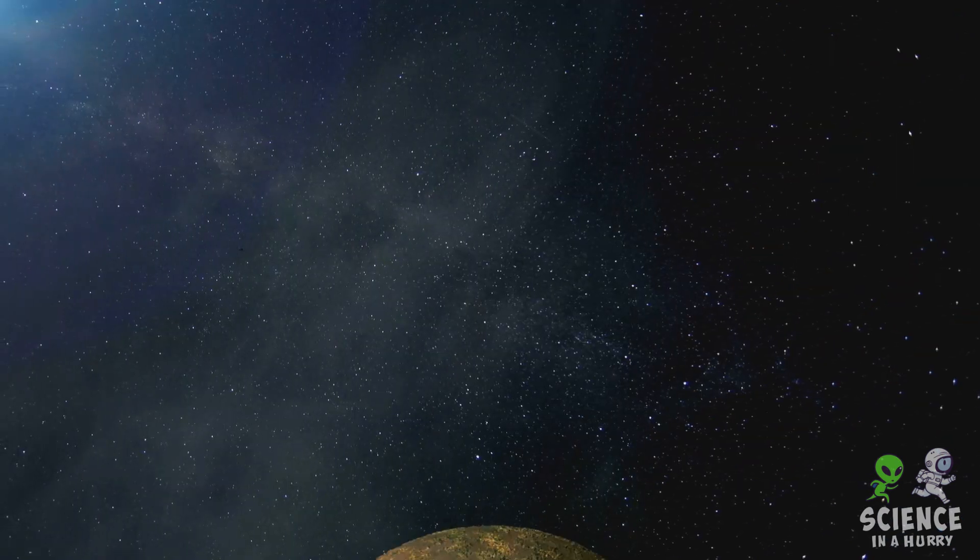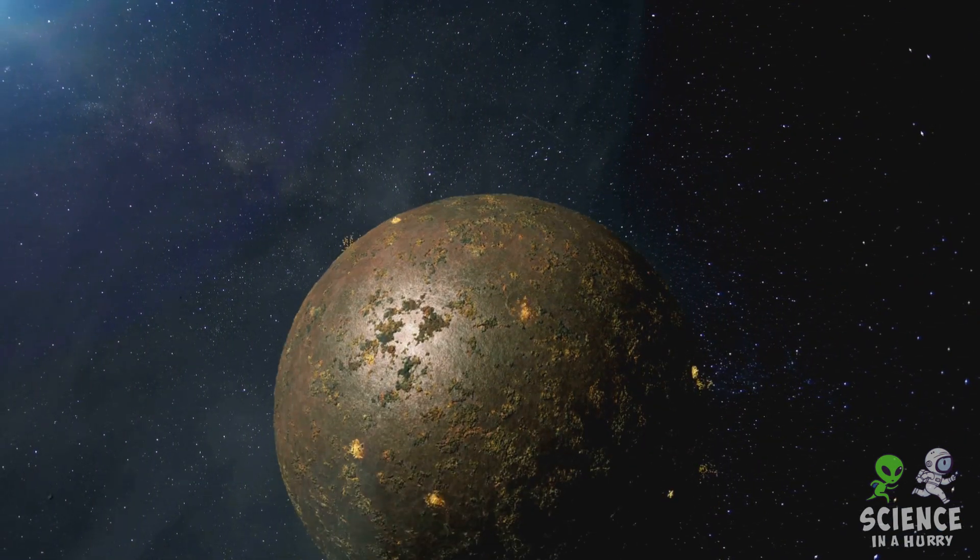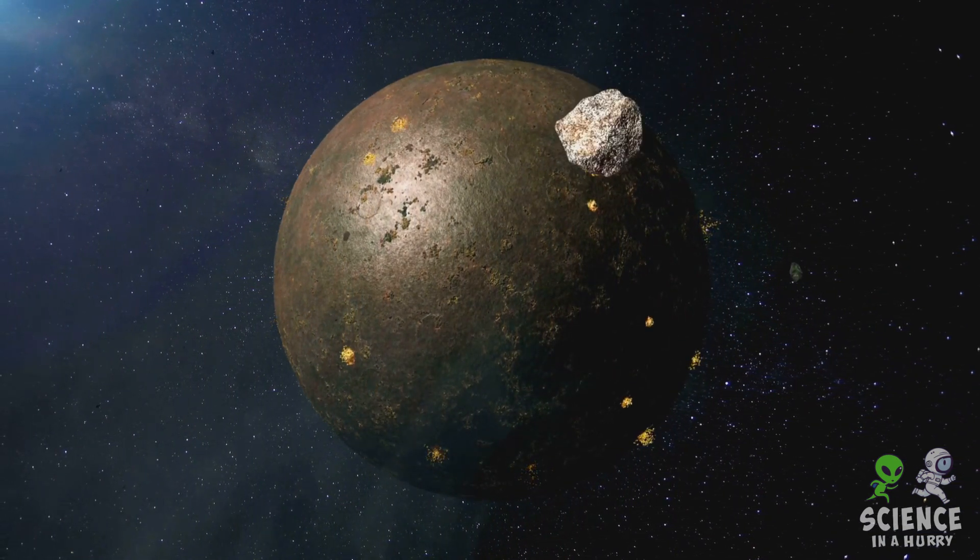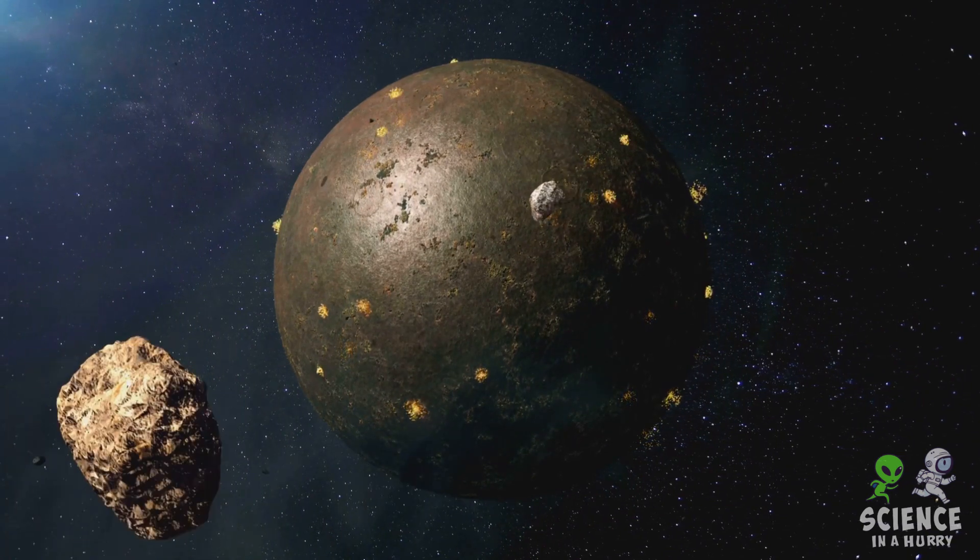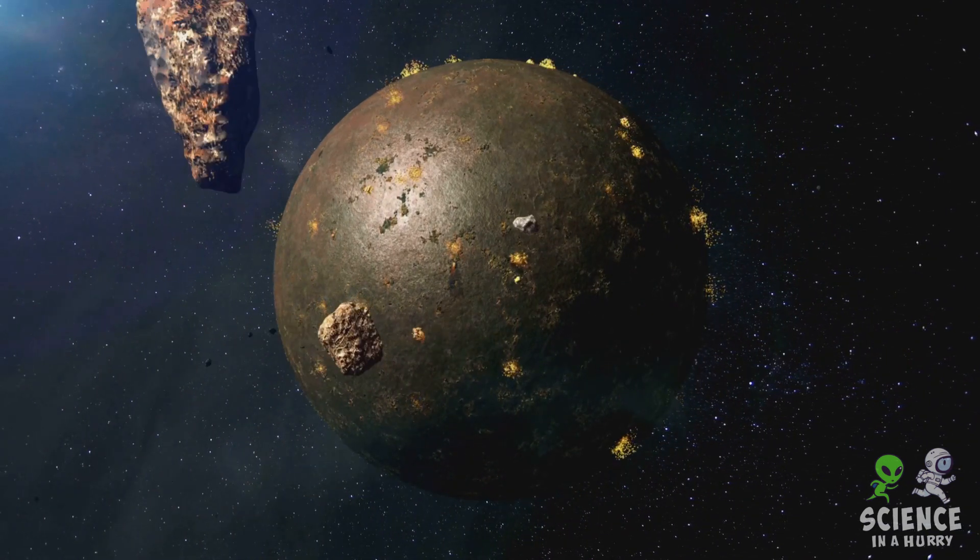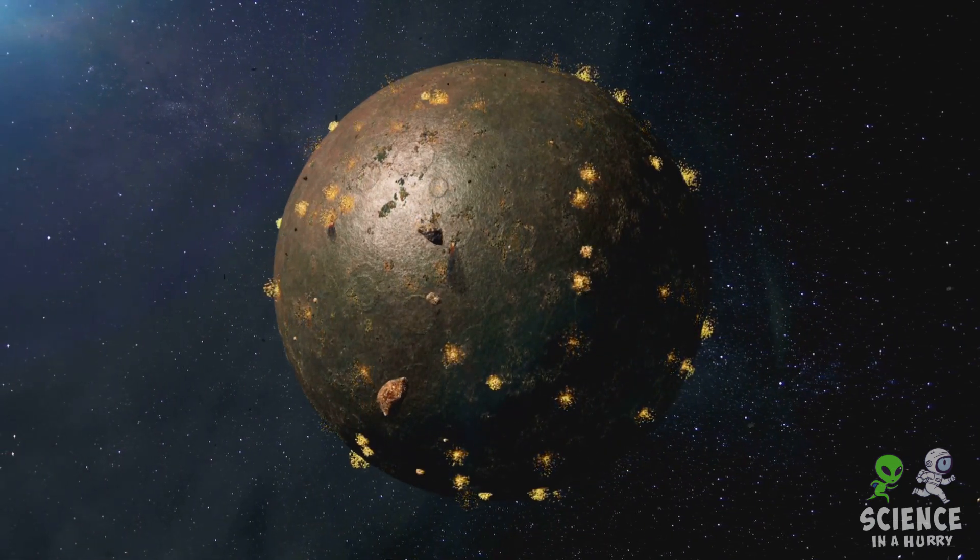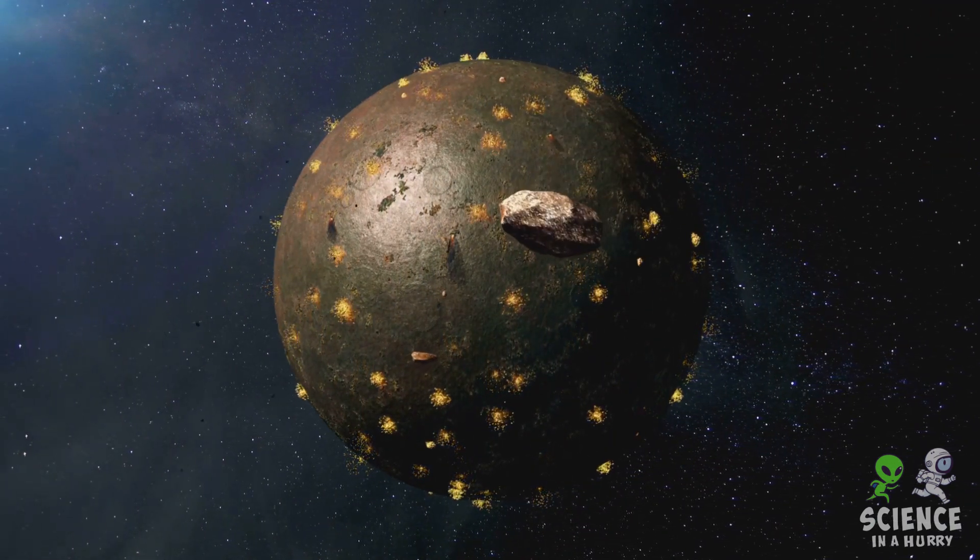But the formation of a solar system is not a gentle process. It's marked by collisions and chaos. Protoplanets, the young forming planets, collide and merge, shaping the final architecture of the solar system. Some of these collisions are catastrophic enough to shatter planets or eject them from the system entirely.